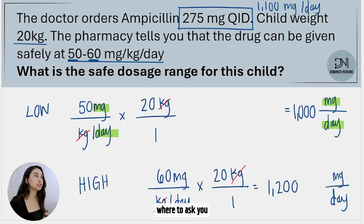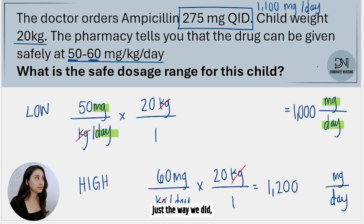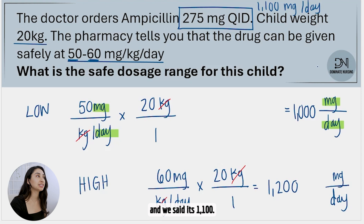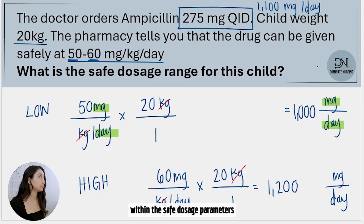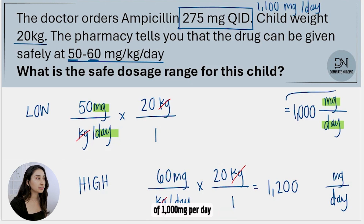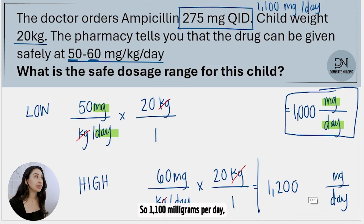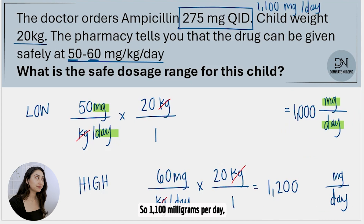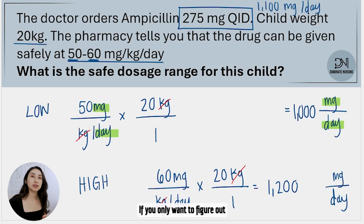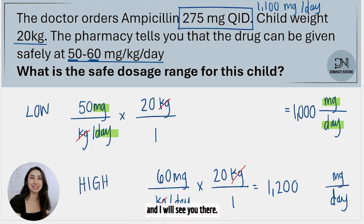If the question asks whether the doctor's order is within the safe range, you figure out that 275 milligrams QID equals 1100 milligrams per day. Does 1100 milligrams per day fit within the safe dosage parameters of 1000 milligrams per day as the low and 1200 milligrams per day as the high? It does. So the doctor's order of 1100 milligrams per day is within safe parameters. If you only want to figure out whether the doctor's order is within a safe range, I do have that video, so go ahead and check it out.